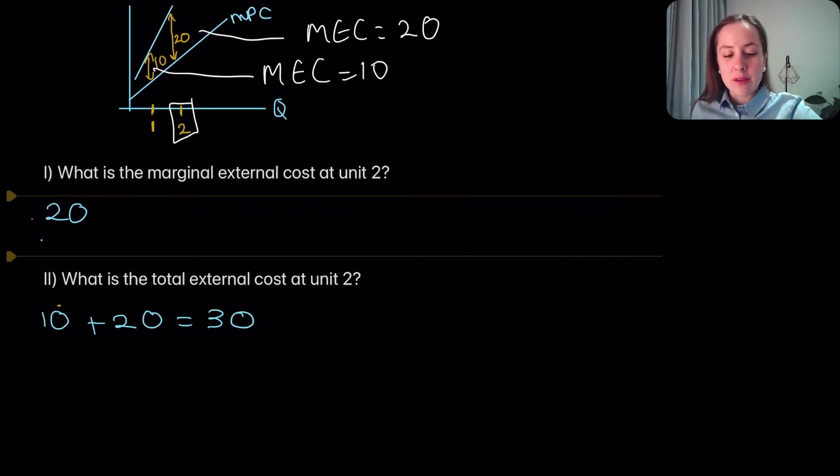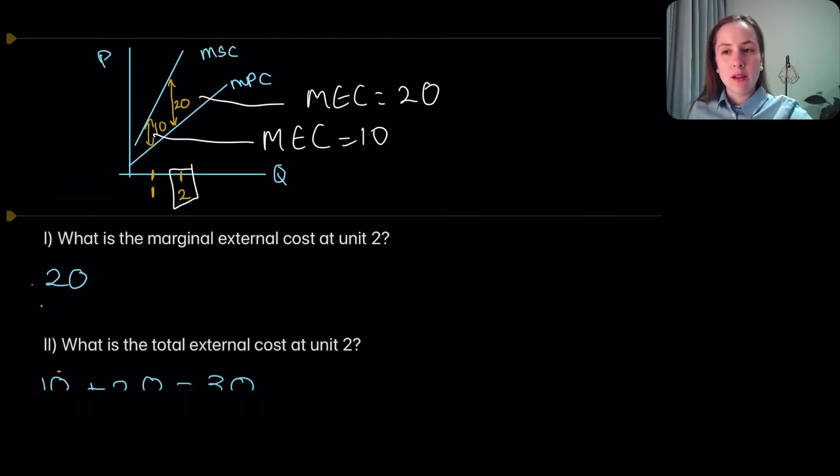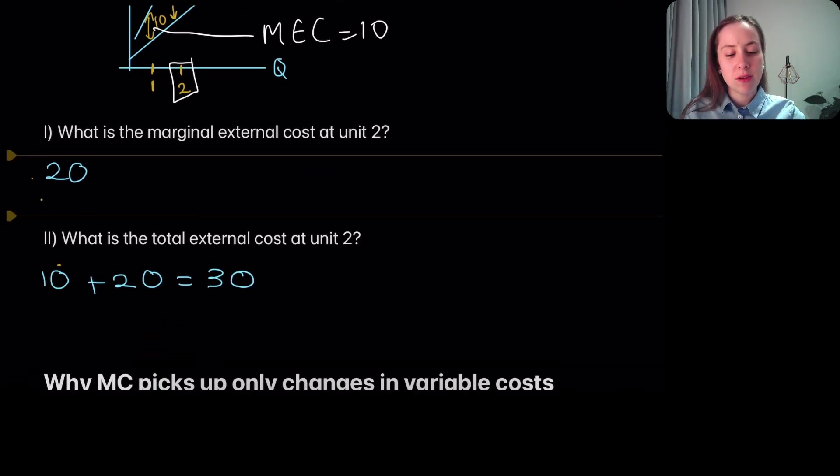To work out the total external cost at unit 2, we need to add up all the costs that have been faced by the firm or by society up until unit 2. So the first unit adds 10 to costs, so the total external cost at unit 1 is 10. But then at unit 2, you add on another 20, so it gives you a total external cost of 30.